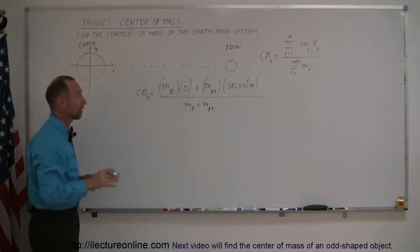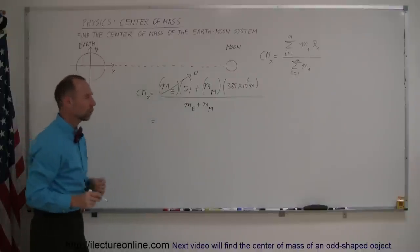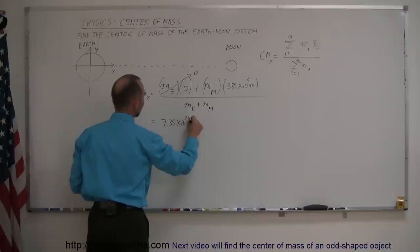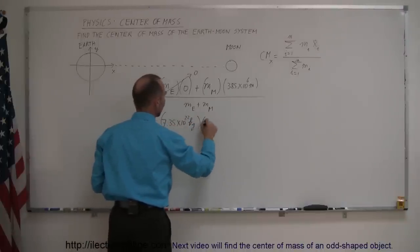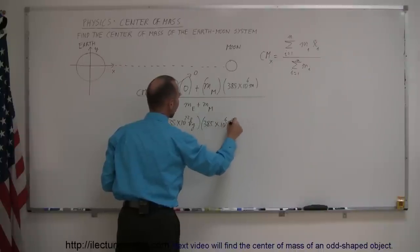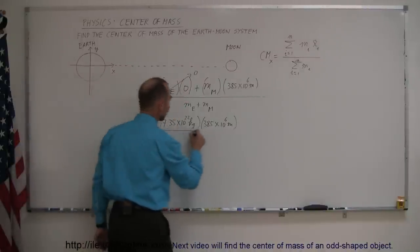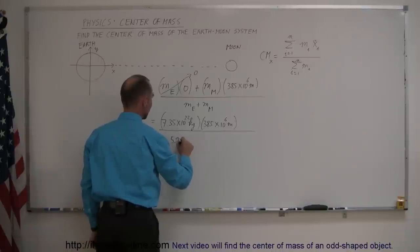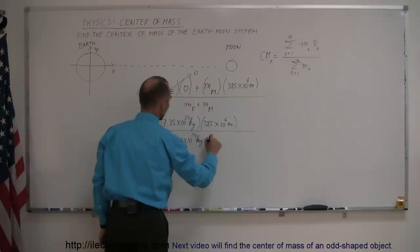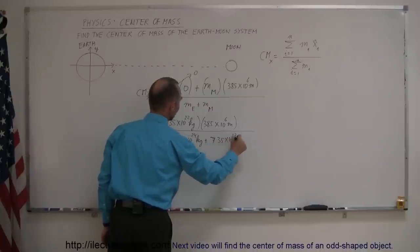Now we still have to plug in the mass of the Earth and the Moon. The Earth-times-zero term is already zero, so this equals the mass of the Moon, which is 7.35×10²² kilograms, multiplied times 385×10⁶ meters, divided by the mass of the Earth — 5.98×10²⁴ kilograms — added to the mass of the Moon, 7.35×10²² kilograms.